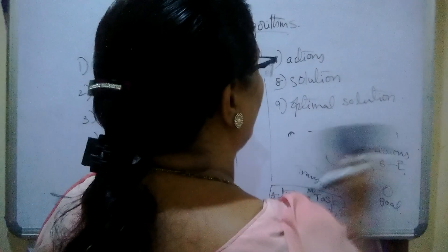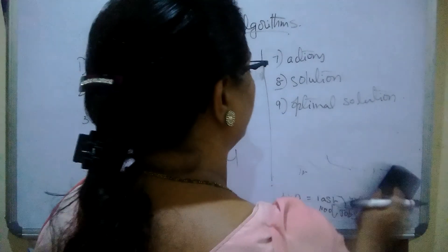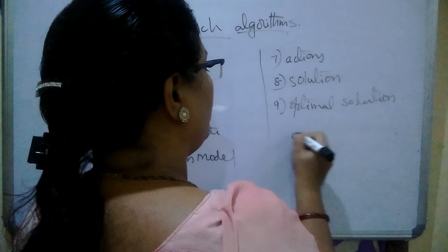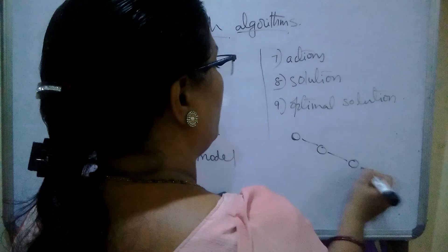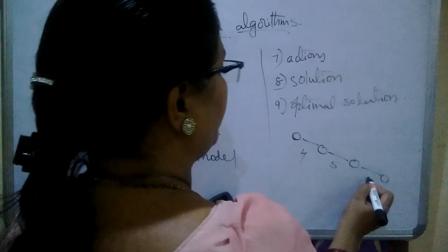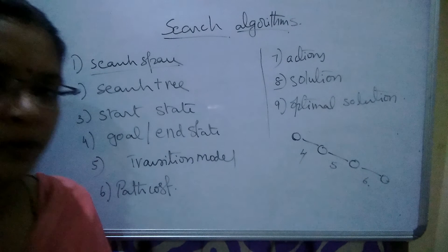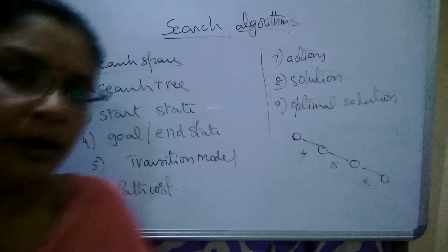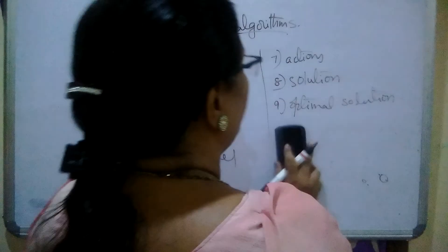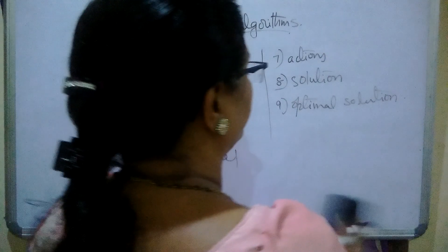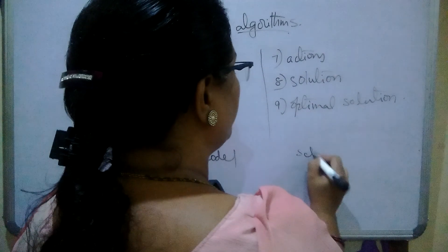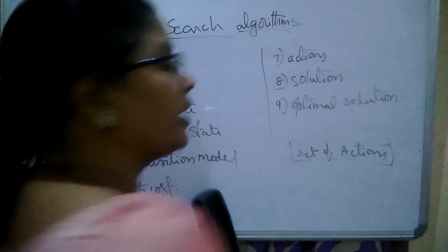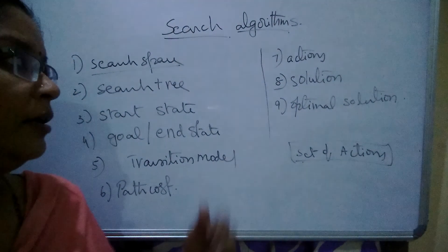The next one is path cost. Path cost is a numerical value we assign from one node to another node — from start node to intermediate nodes to the goal node. And the next one is actions. The set of actions generated by the agent is called actions.